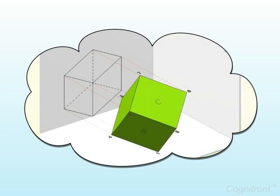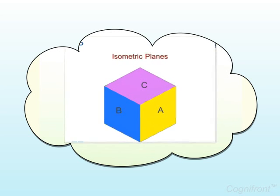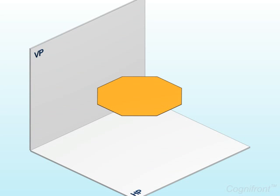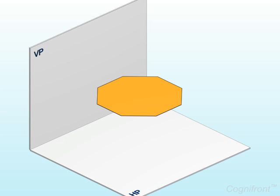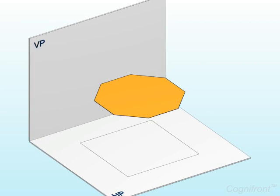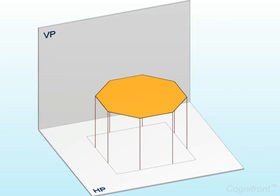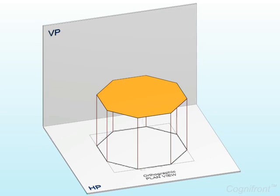Welcome. In the last module we learned how to construct isometric views by simple method. Let's go ahead discussing interesting methods of drawing isometric views. First we'll study box method. Let's illustrate an example. A regular octagon has its surface parallel to HP.